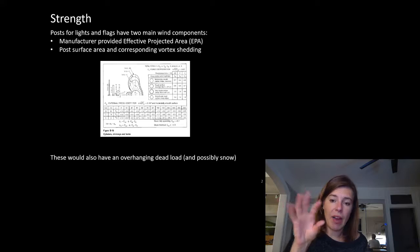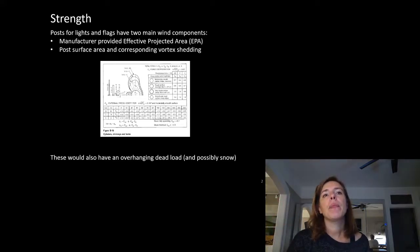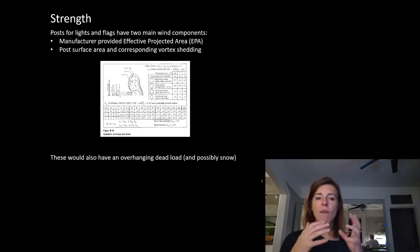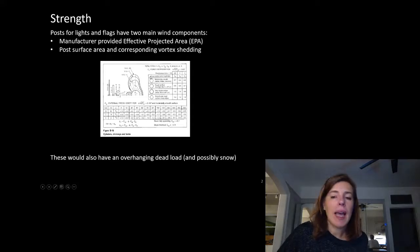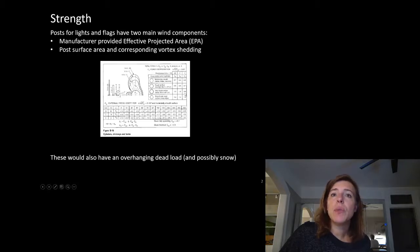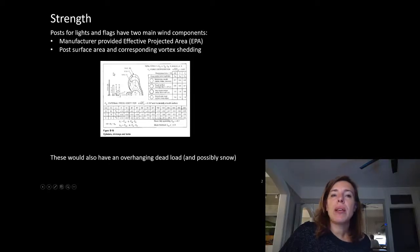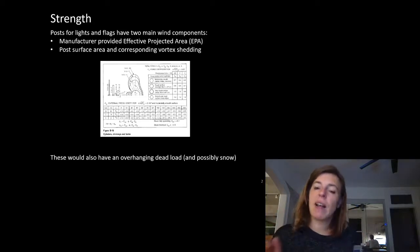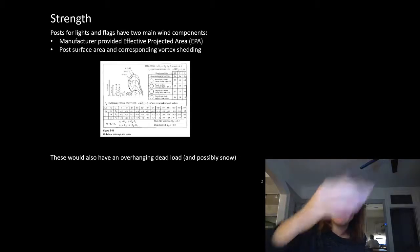There's the effective projected area from whatever object you're holding up, but there's also the post itself. How the post gathers wind depends on its shape — it has its own projected area but also causes vortexes and other effects dependent on its shape. I wanted to show you the image that gives us our CF factor, which is used instead of what we would normally have as our CP factor in our wind calculation. It gives us those values based on the height-to-width ratio and what kind of surface the post is — whether it's a round surface or faceted sides, because that changes the way wind flows around the post.